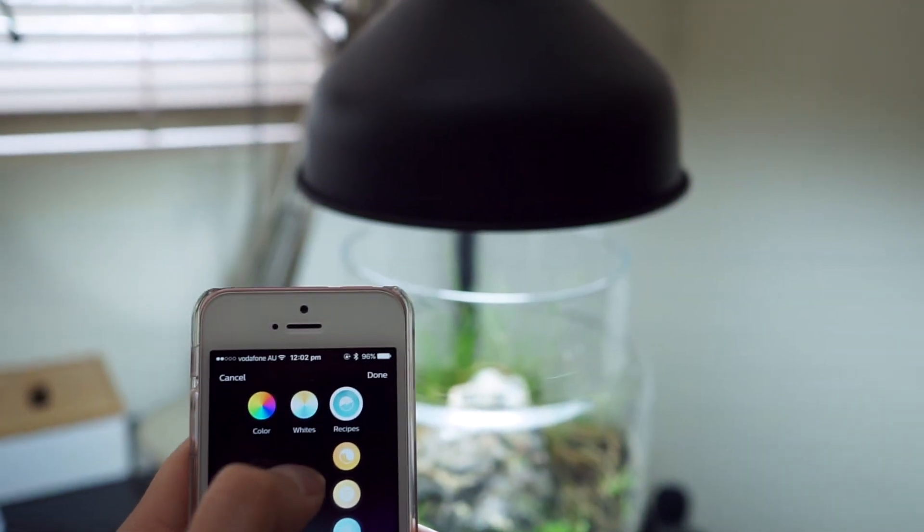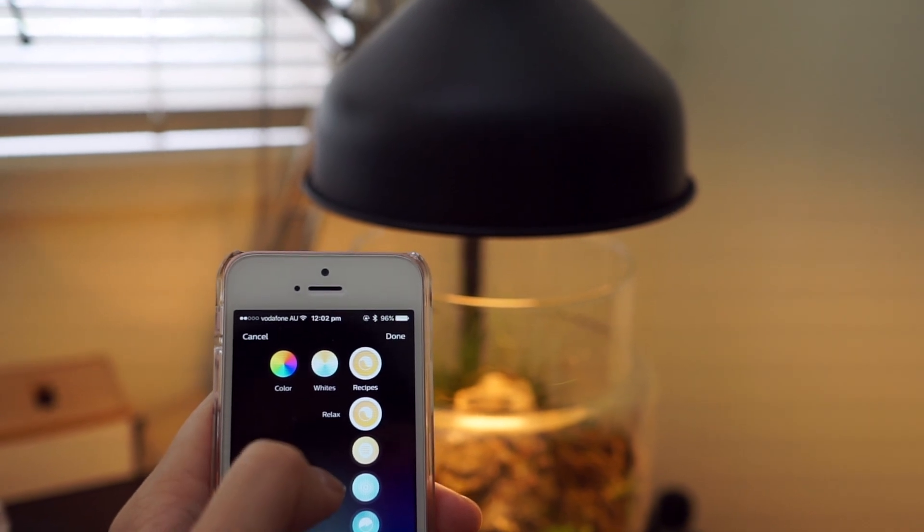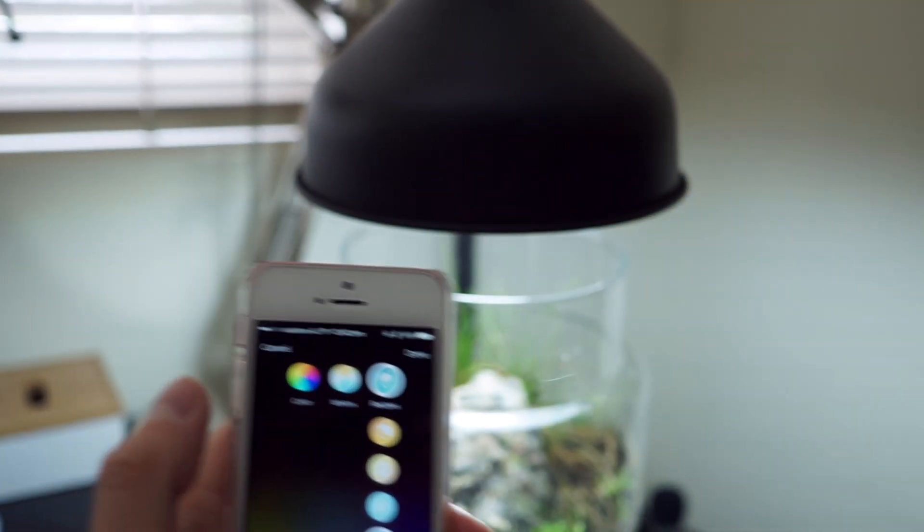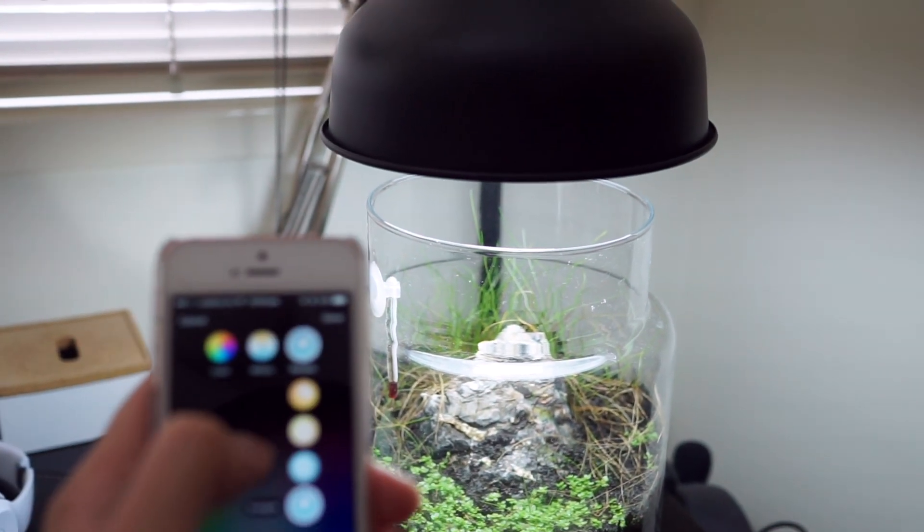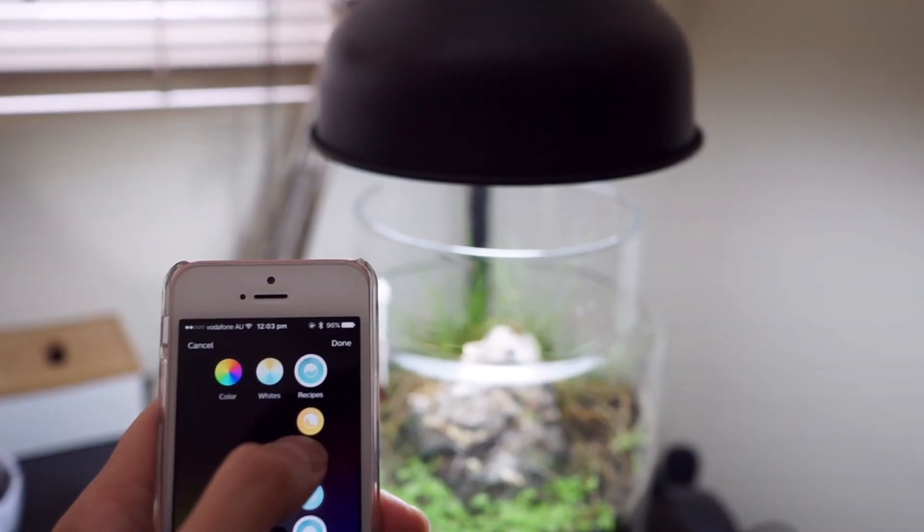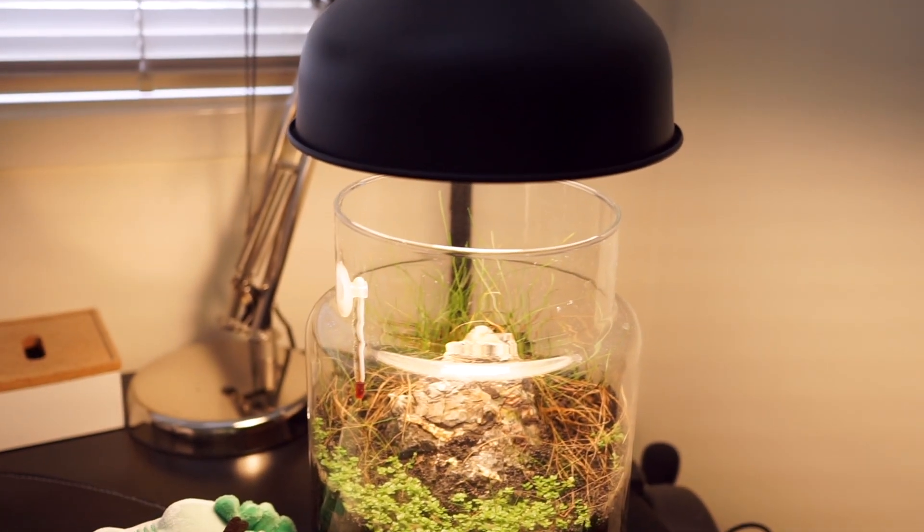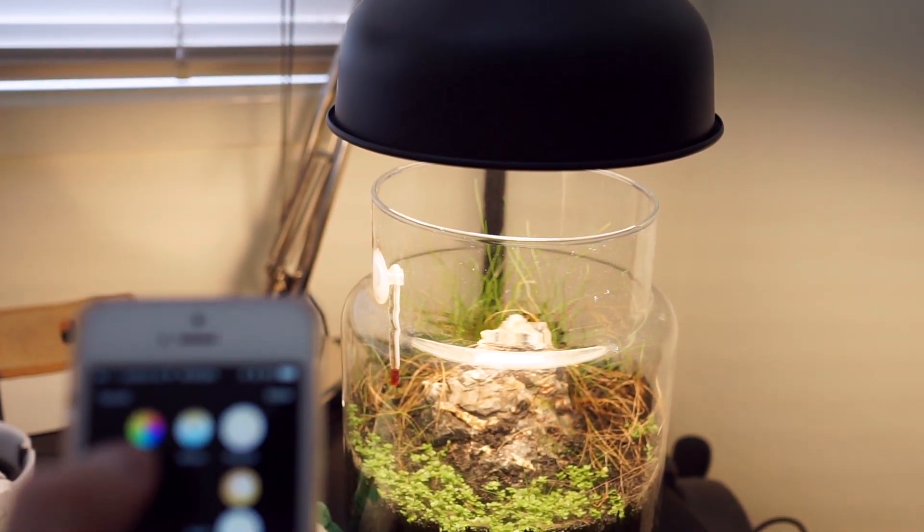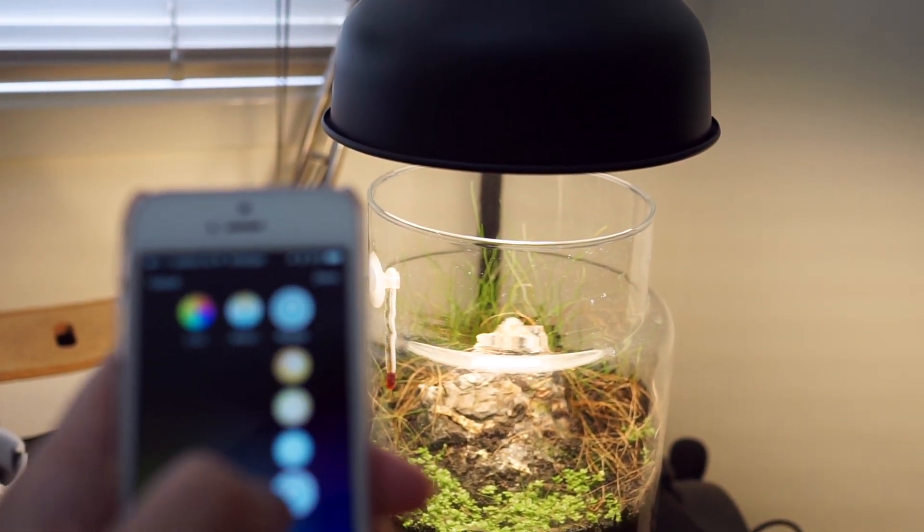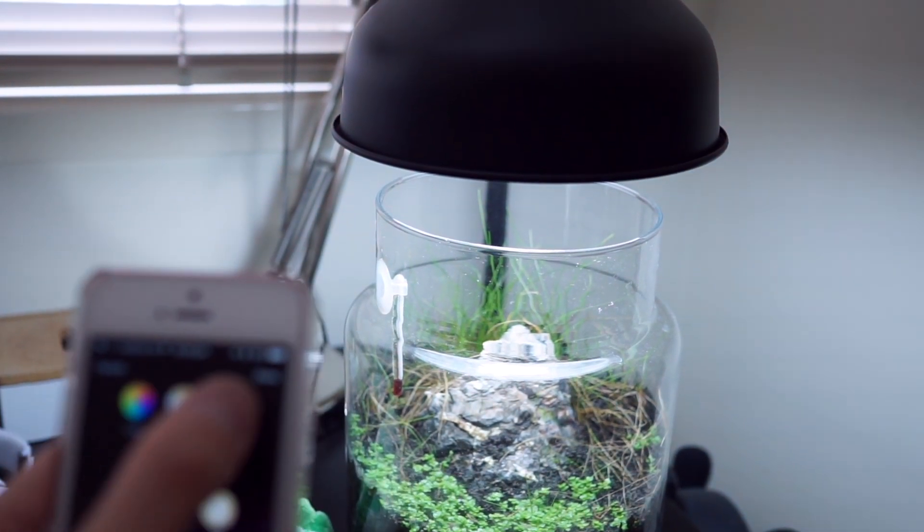So I've set it up so that during the morning it's more sunrise-sunset colors, and then during the day it transitions to more of a daylight color. At nighttime it starts going a bit warmer in temperature, just so it doesn't give me too much glare and also maybe this will simulate a day-night cycle for the plants.